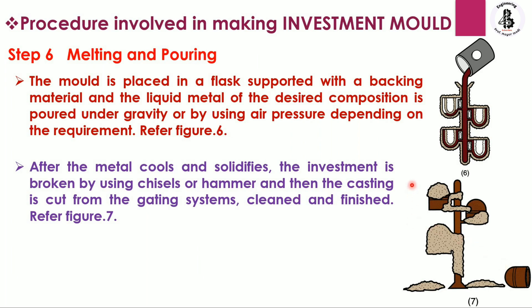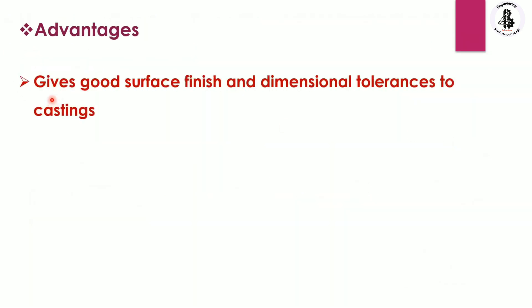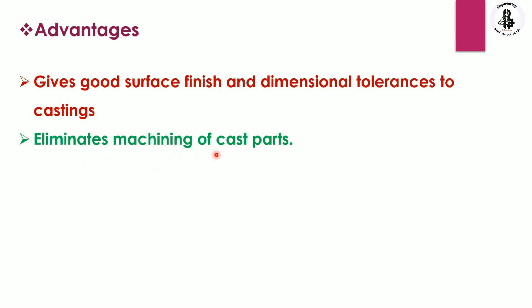The major advantages of this process include its use for making small, high-precision components. In a single wax tree, you can make different shapes and sizes of components. The process gives good surface finish and dimensional tolerance to castings, and it eliminates machining of the cast parts due to the high finishing achieved. Wax can also be reused.